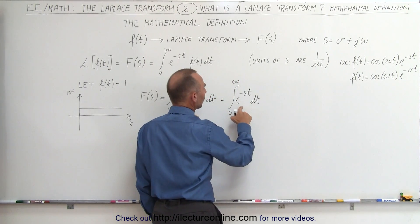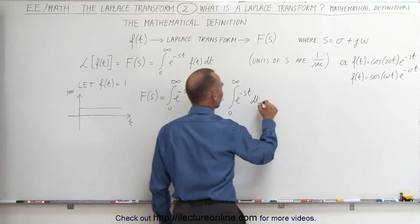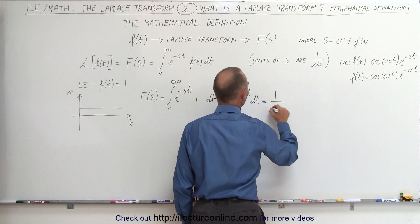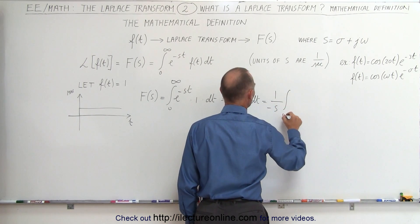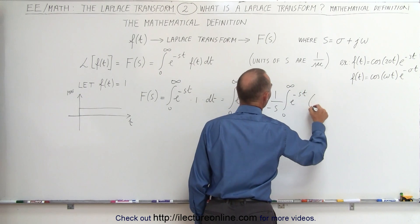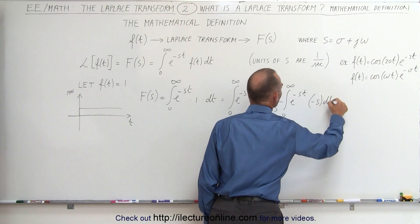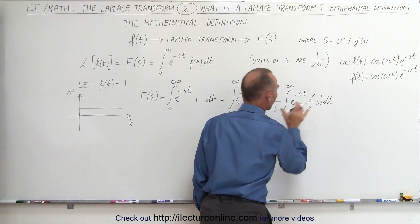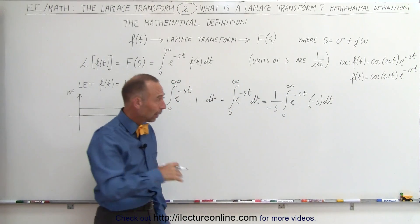When we integrate that, we're going to need a minus s here, so this becomes 1 over minus s times the integral from 0 to infinity of e to the minus st times the minus s dt, because we have to have the proper differential in order to integrate that. Now we can integrate it.